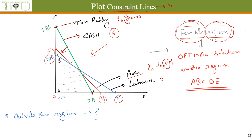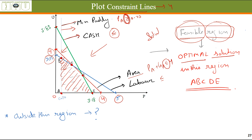Now we will plot these constraint lines on a graph. We plot the maximum quantities on the x-axis and y-axis: the cash constraint line has 3.18 on the x-axis and 5.83 on the y-axis; the land constraint has 4 and 4; the labor constraint has 5 and 3.75. By looking at the less-than-or-equal-to signs, we should look inward, and the greater-than-or-equal-to sign for paddy means moving outward. The common area of all four lines gives us the feasible region with coordinates A, B, C, D, and E.